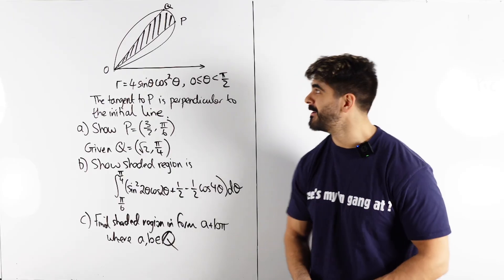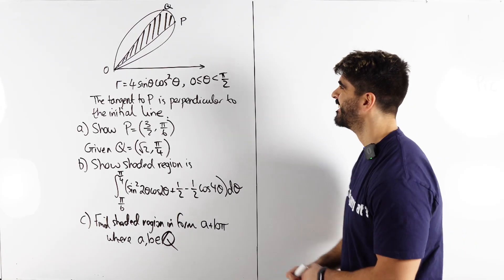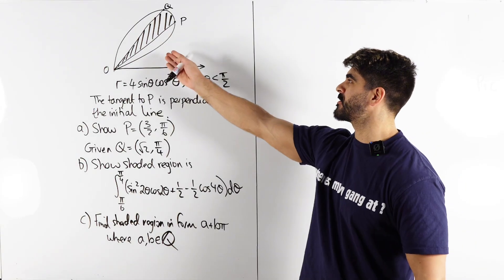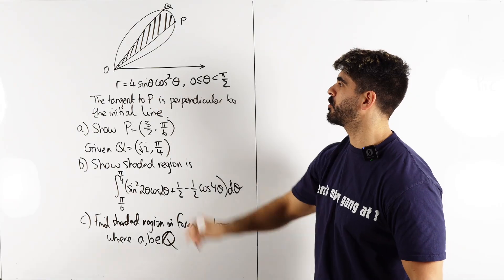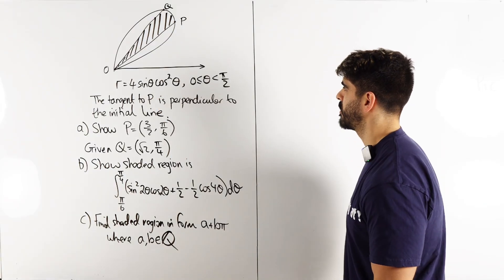Cheeky cheeky polar coordinates. So we've got this polar and we've got r equals four sin theta cos squared theta.